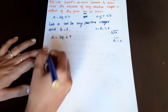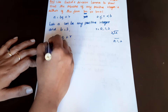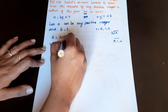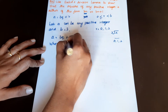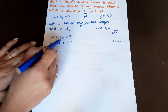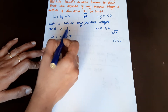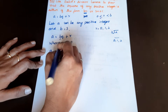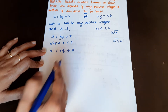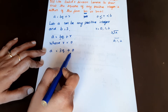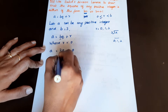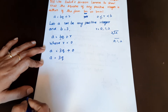Where r is equal to 0: a is equal to 3q plus 0, so a equals 3q.